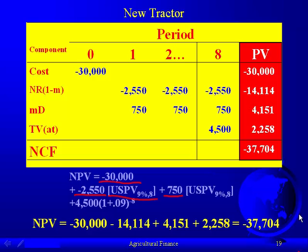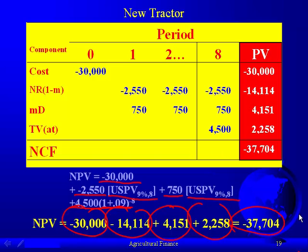The after-tax terminal value is a lump sum of $4,500, so we use the single sum factor. That gives us the present value of each of those components. We add them up, and it comes out to negative $37,704.